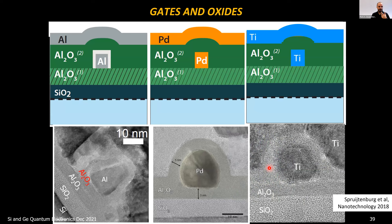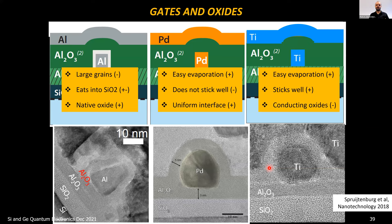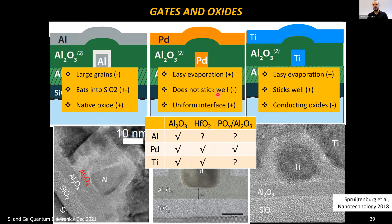This means that when making a device, it's not just a matter of depositing a dielectric and a metal — you need to look very carefully at what this does to your entire device. What's the experiment? What do you want to learn? Based on that, choose the combination of layers most suitable. For example, aluminum's large grains can be negative, and it eats into silicon oxide — which can be good or bad. We published this as what we call the silicon quantum dot cookbook, taking into account processes like annealing and atomic layer deposition.